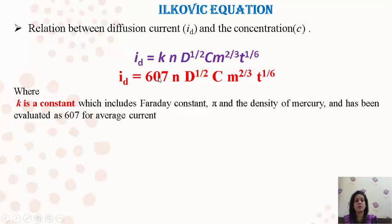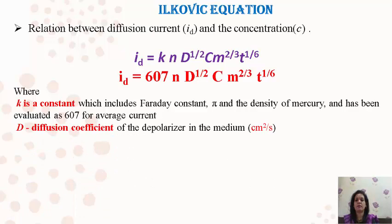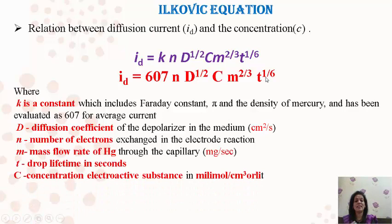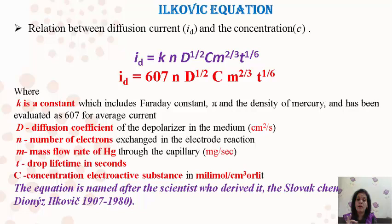The constant K is derived from Faraday's constant, pi, and the density of mercury, and can be evaluated as 607 for average current. So the equation can be written as Id = 607 · n · D^(1/2) · C · M^(2/3) · T^(1/6). Here n is the number of electrons taking part during the reaction — for cadmium it is 2. D is the diffusion coefficient of the polarizable medium in centimeters squared per second. M is the mass of mercury flowing through the capillary in milligrams per second. T is the drop time in seconds. C is the concentration of the electrolyte in millimoles per centimeter cubed. This equation is named after the Slovak chemist who derived it — Ilkovic.